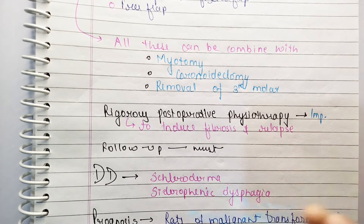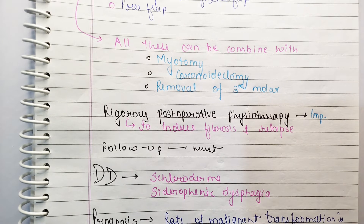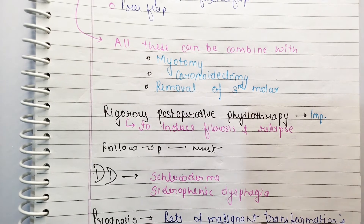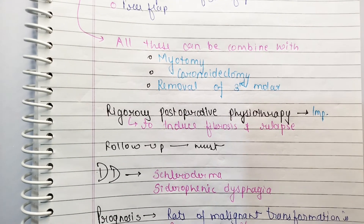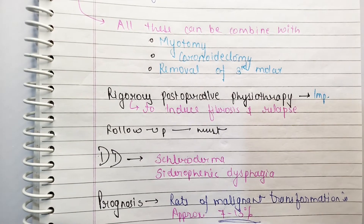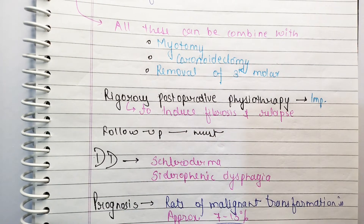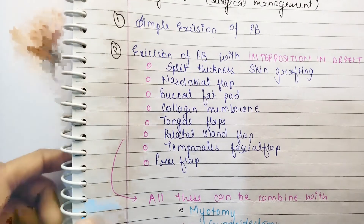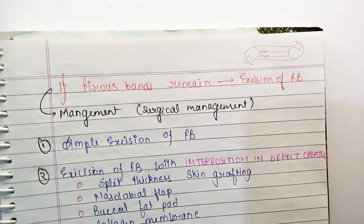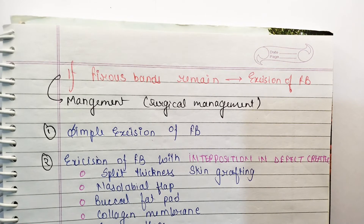Follow-up is very important. The differential diagnosis for OSMF includes scleroderma and sideropenic dysphagia. Regarding prognosis, the rate of malignant transformation is up to 7 to 13 percent — this ratio is important to know. OSMF has the capability to convert into a malignant form, meaning it can ultimately develop into cancer.